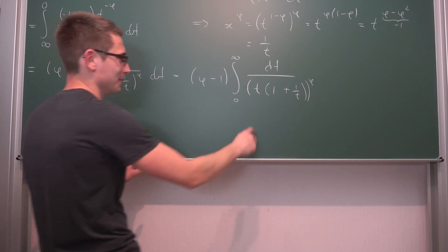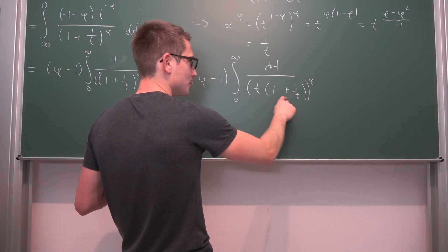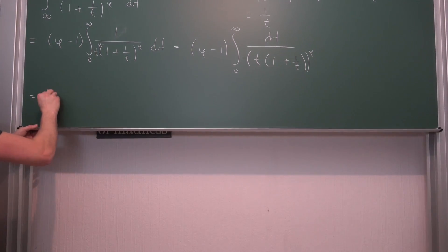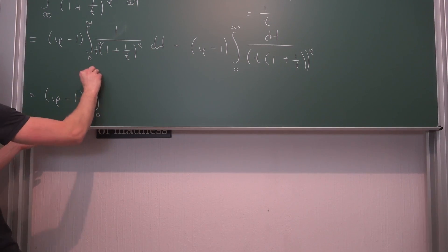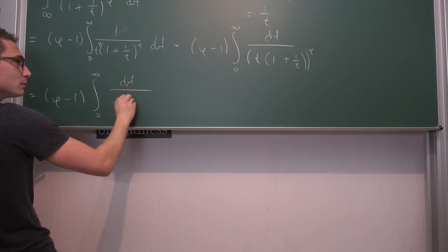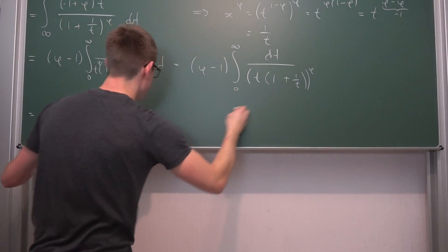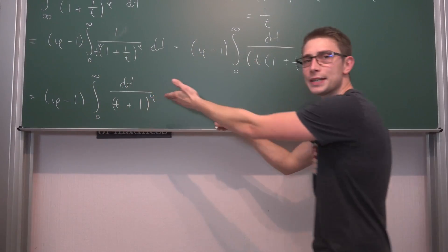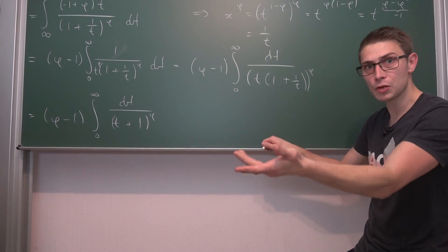And now the cool thing about that is that we can just distribute the t into here, giving us overall phi minus 1 times the integral from 0 to infinity of dt divided by t plus t divided by t, which is 1, to the phi power.